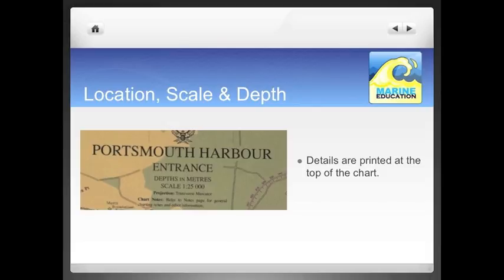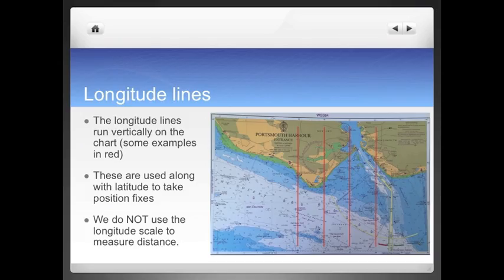The location, scale and depth of the chart can be found at the top of the chart. The depth is generally in metres. The longitude lines are the ones that run up and down our chart vertically. There are some examples shown in red in this image. These are the ones that we use to take position fixes in combination with the latitude lines. We do not use the longitude scale to measure distance, as it varies depending on where you are in the world.